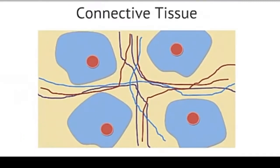Connective tissue includes a large variety of tissues that are unified under this title because they are composed of a sparse population of cells suspended in a uniform extracellular matrix. Extracellular means that this network of protein fibers and other material are found outside of the cells. Each type of connective tissue has a different extracellular matrix and performs a different function in the body.